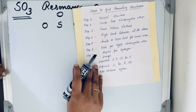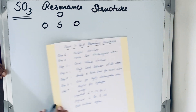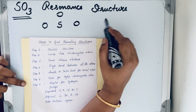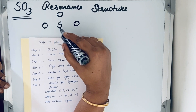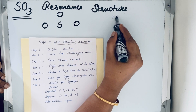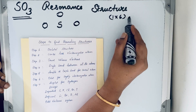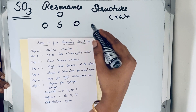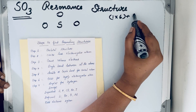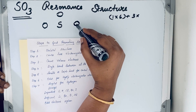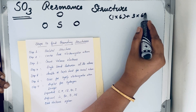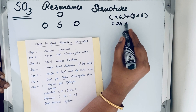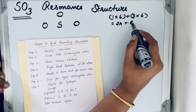Step 3: Count valence electrons. Sulfur has 6 valence electrons and there is only one sulfur, so 1 × 6. There are 3 oxygens, each with 6 valence electrons, so 3 × 6 = 18. Total valence electrons = 6 + 18 = 24.